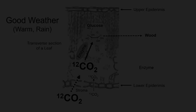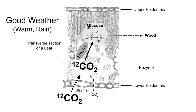Here again a transverse section of a leaf is shown, with the upper epidermis, lower epidermis, and the stomata on the lower side. When plants are doing well — at sufficient temperature and enough rain — the stomata are widely open, and mainly carbon-12 CO2 is stored in the wood. Because there is more carbon-12 CO2 in the air, more carbon-12 CO2 is transported into the leaf. The carbon dioxide is then transformed into glucose by a specific enzyme, and finally it produces wood. In fine weather, we have a regular process with a lot of glucose, a lot of wood, and therefore the rings are broader.